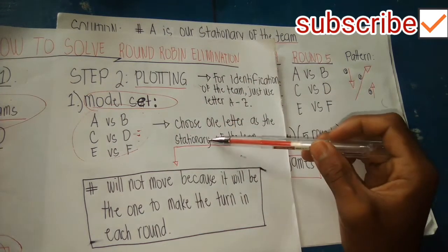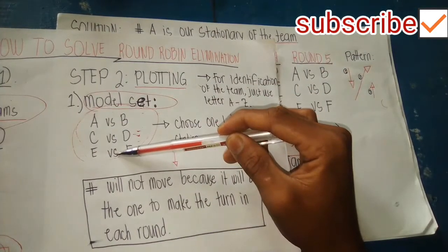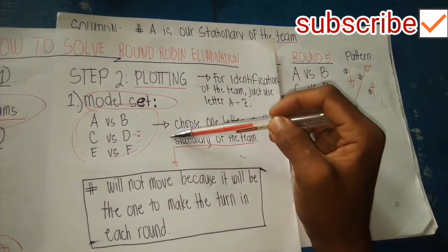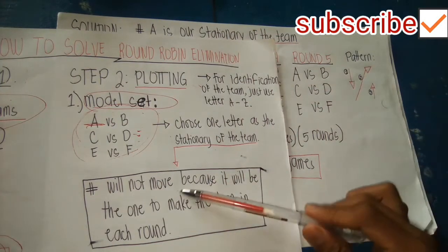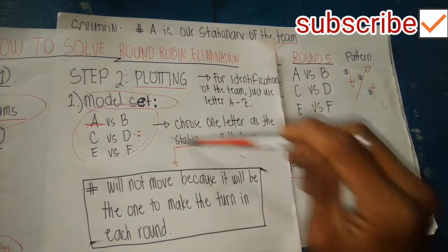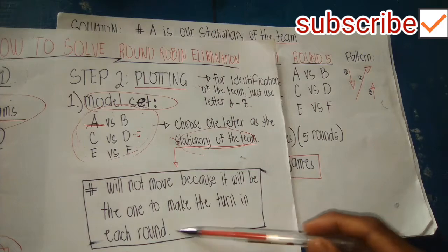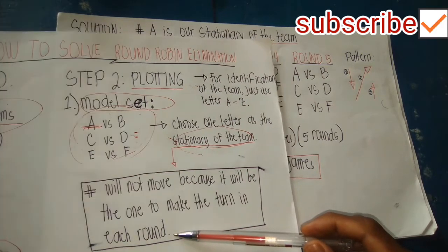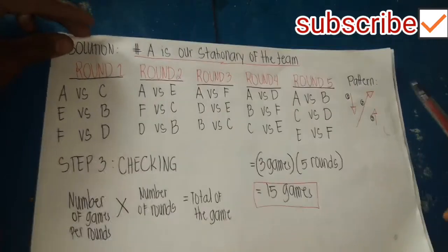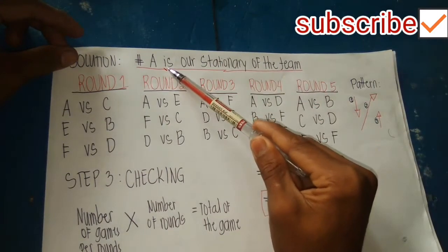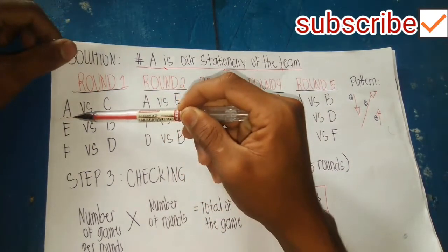We need to choose one letter as the stationary team. In this model set we will choose A as the stationary team. The stationary team will not move — it stays in place and serves as the anchor for each round. So A is our stationary team.